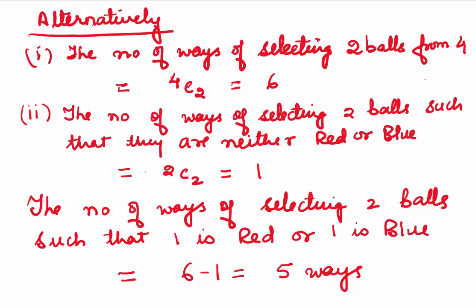Alternatively, using combinations: total ways to select 2 from 4 is 4C2 equals 6. Ways to select 2 balls that are neither red nor blue is 2C2 equals 1 (only green and yellow remain). So ways where at least 1 is red or blue equals 6 minus 1 equals 5 ways.